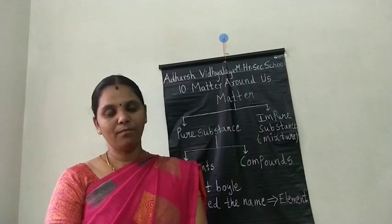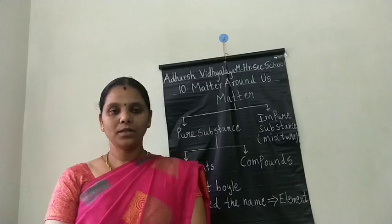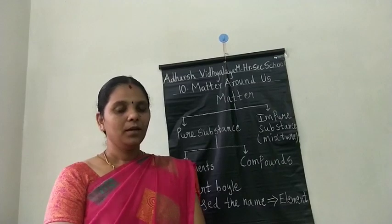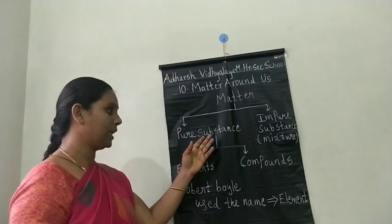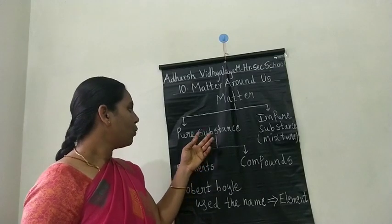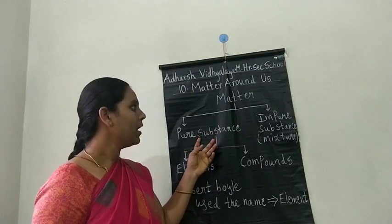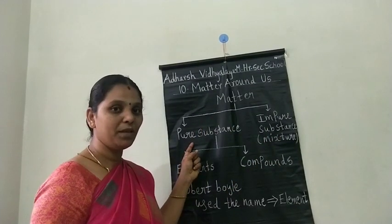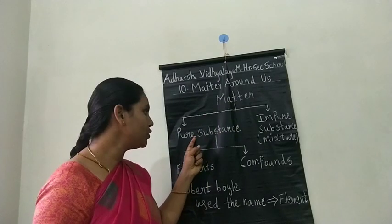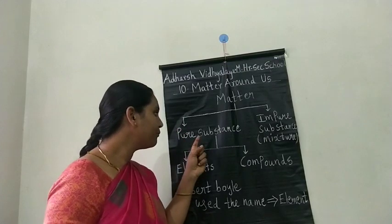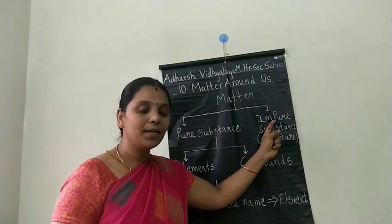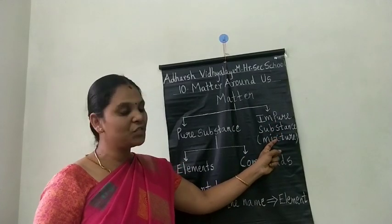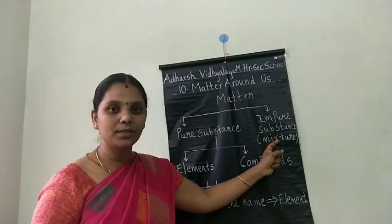In 9th standard, there is another classification of matter — based on chemical composition. Based on chemical composition, matter can be classified into two types: one is a pure substance, and another one is an impure substance, otherwise called a mixture.